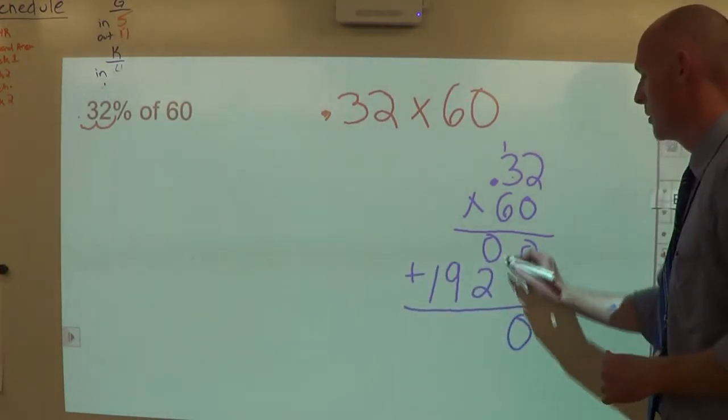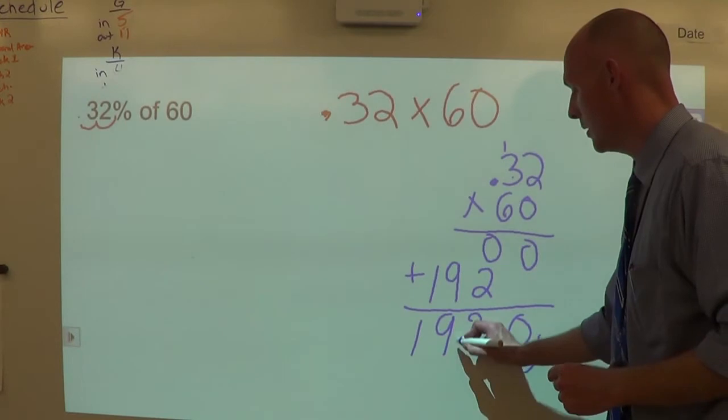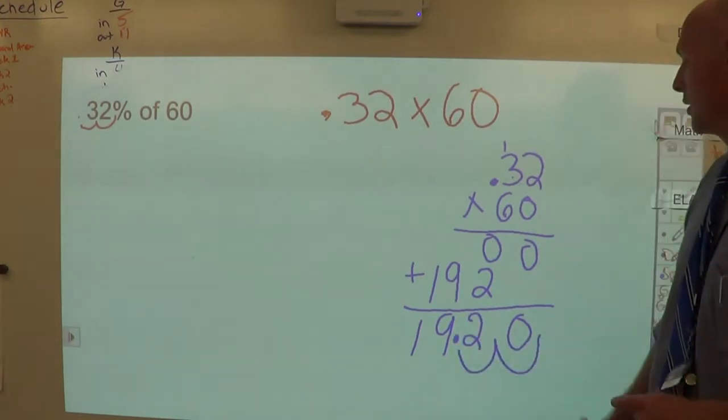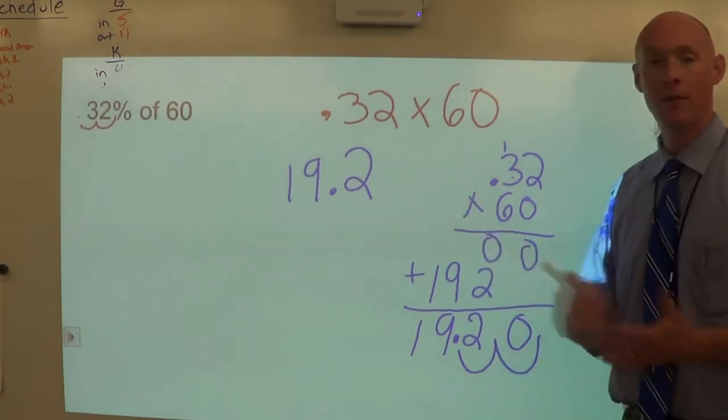Fantastic, add them up. That would be zero, that would be two, that would be nine, and that would be one. Next count your decimal places. I have two decimal places here, none here, so we're going to move it once, we're going to move it twice. And it looks like our answer is nineteen point two. We could just leave off that last zero. Perfect.